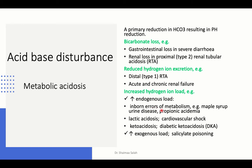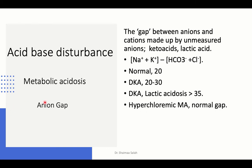Endogenous acid loads occur in inborn errors of metabolism like maple syrup urine disease or propionic acidemia, where accumulation of organic acids gives high anion gap metabolic acidosis. The same applies to lactic acidosis accompanying any case of shock or hypoperfusion — even heart failure can shift glycolysis to anaerobic, producing high amounts of lactate. Addition of lactate causes high anion gap metabolic acidosis. Diabetic ketoacidosis with accumulation of keto acids also causes high anion gap metabolic acidosis.